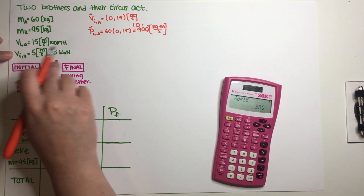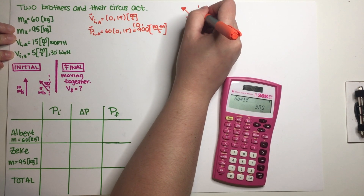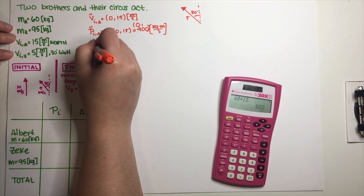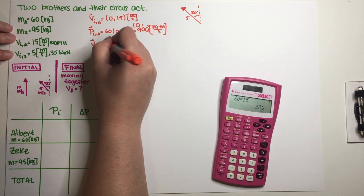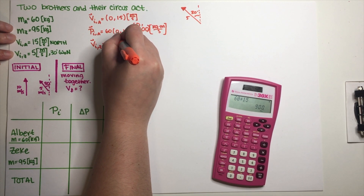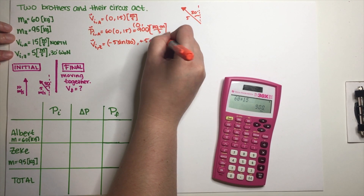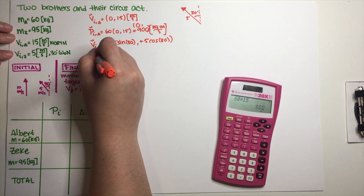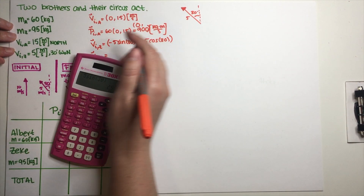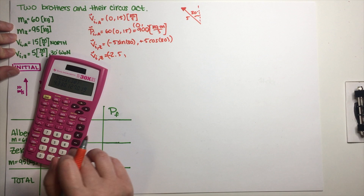For Sig, we need to separate his velocity into x and y components. He has a vector of magnitude 5 meters per second at 30 degrees west of north. Using SOH-CAH-TOA, the x-component is negative 5 sine of 30 degrees and the y-component is positive 5 cosine of 30 degrees. So: 5 sine 30° equals 2.5 (negative 2.5 for x) and 5 cosine 30° equals 4.3 (positive for y).